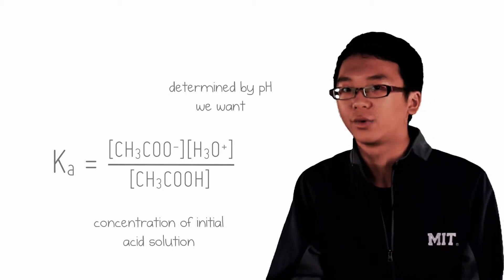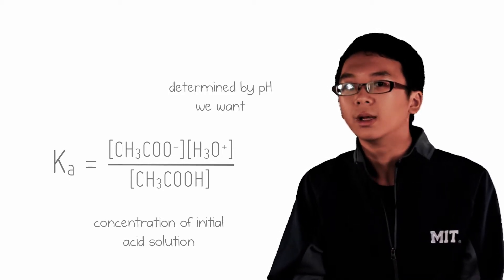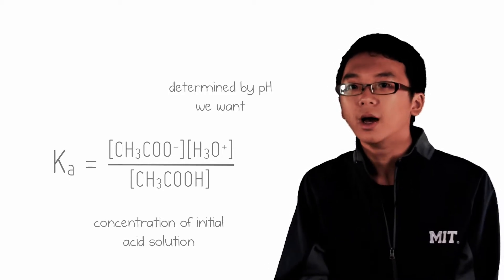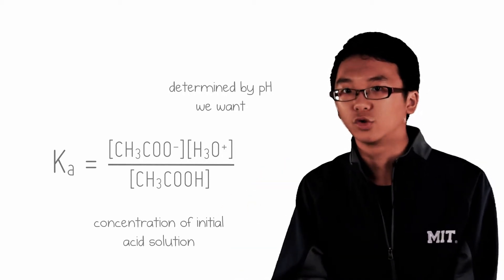If I have 1 molar ethanoic acid, the concentration of ethanoic acid at equilibrium will be less than 1 because of acid dissociation. However, since we are making a buffer, we are adding a lot of ethanoate ions into the solution,